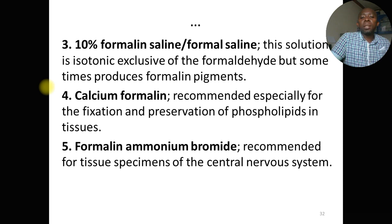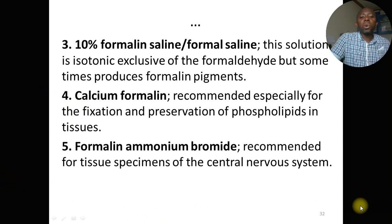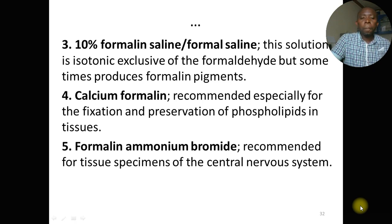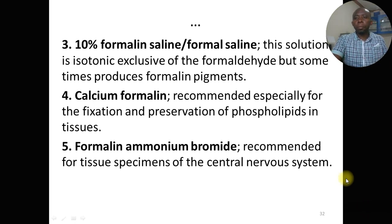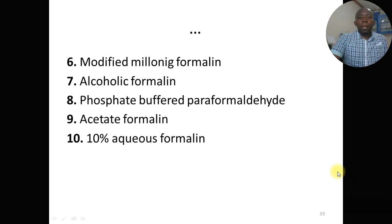Fourth, calcium formalin is recommended especially for fixation and preservation of phospholipids in tissue. Fifth, formalin ammonia bromide is recommended for tissue specimens of the central nervous system. The choice of fixative may depend on the type of tissue or the type of investigation — for example, calcium formalin for phospholipids and formalin ammonia bromide for CNS tissue.